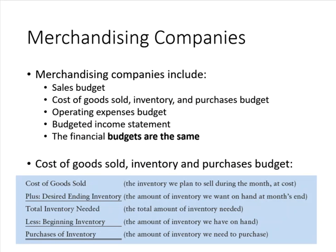Because merchandise companies purchase ready-made products, they don't need to prepare production, direct materials, direct labor, or manufacturing overhead budgets. Replacing these budgets is a combination of cost of goods sold, inventory, and purchases budget. The cost of goods sold, inventory, and purchases budget follows the same general format as the manufacturer's production budget, except that it's calculated at cost in dollars instead of in units.